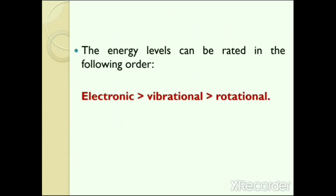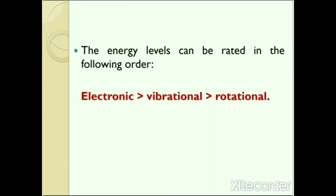Each of these transitions differs by an order of magnitude. Rotational transitions occur at lower energies, and this energy is insufficient to cause vibrational and electronic transitions. Vibrational and electronic transitions require higher energies. So rotational transitions occur at longer wavelengths, vibrational at near infrared, and electronic transitions at the ultraviolet region of electromagnetic radiation.